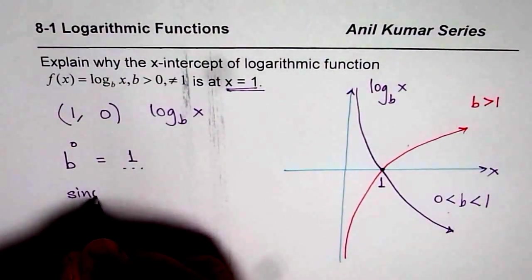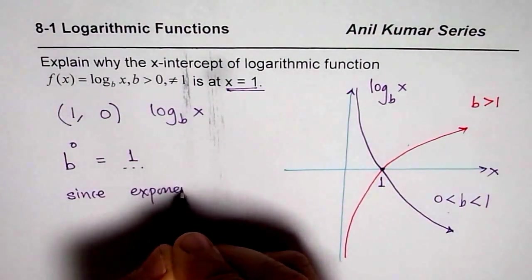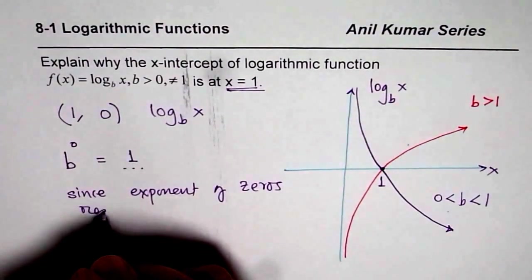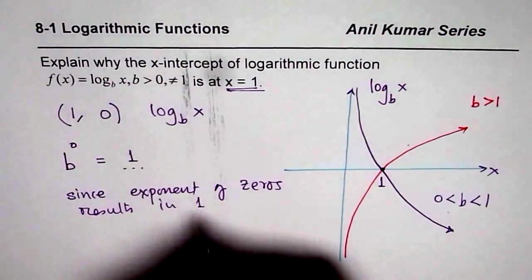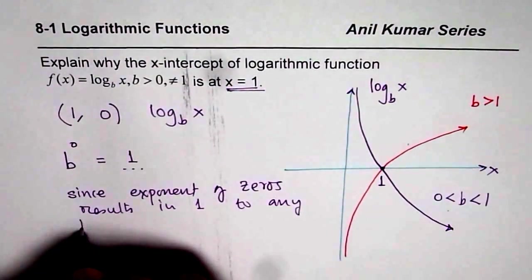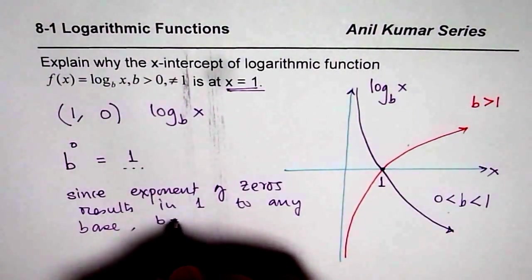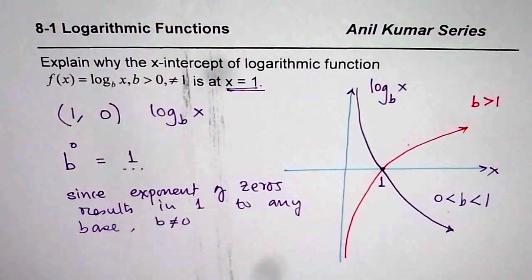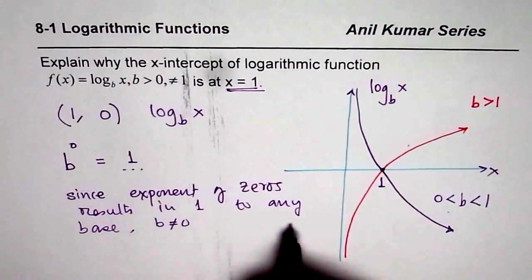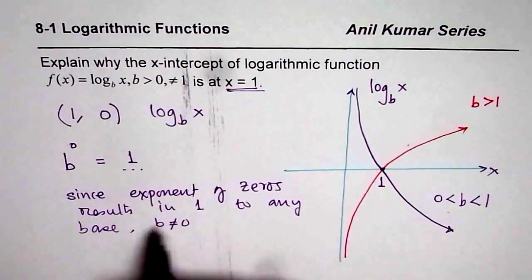Since exponent of 0 results in 1 to any base, where base b is not equal to 0 - even for negative it works, but in any case, in our domain at least, to any base,